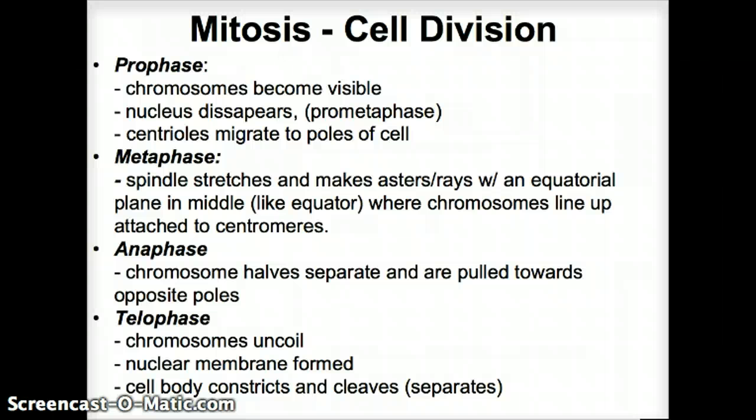The prophase is the first phase. Chromosomes become visible — before this they're a bunch of spaghetti and we can't differentiate them. In this phase, the nucleus also disappears, and those star-like centrioles migrate to the different poles on each side of the cell. In metaphase, a spindle stretches from centriole to centriole, making asters with an equatorial plane in the middle where the chromosomes line up. The asters attach at the centromeres — where the two arms of the X-shaped chromosome cross.